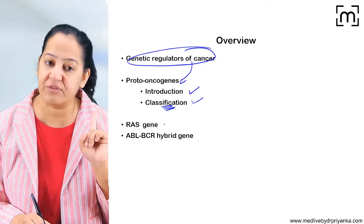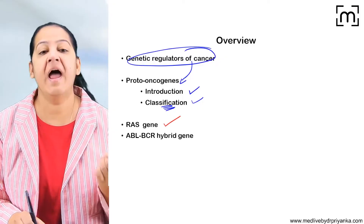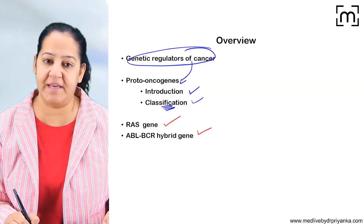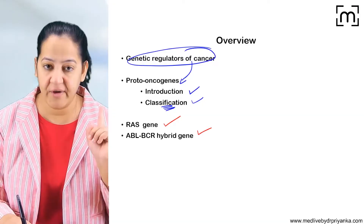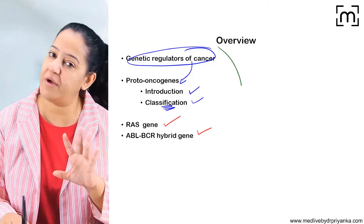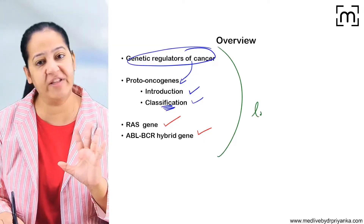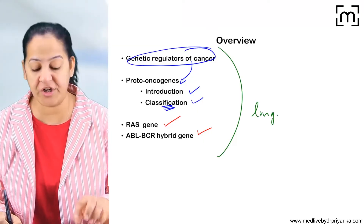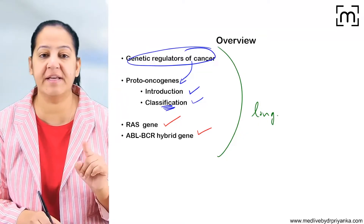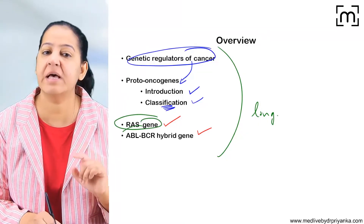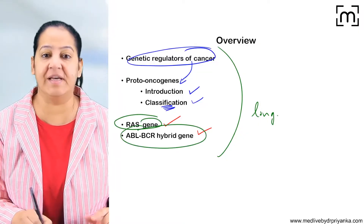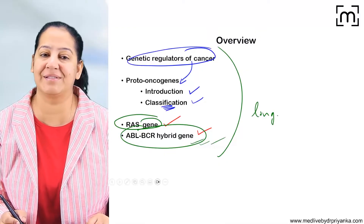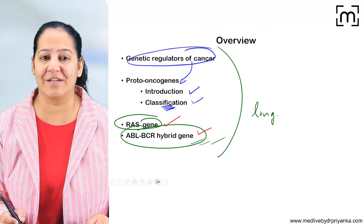From the classification, we will take two ultra-important proto-oncogenes and see their details. I will cover the RAS gene first, then the ABL-BCR gene. If you get a long question, write everything. If you get a short question, it will be on either RAS or ABL-BCR. ABL-BCR is more frequently asked in university exams.